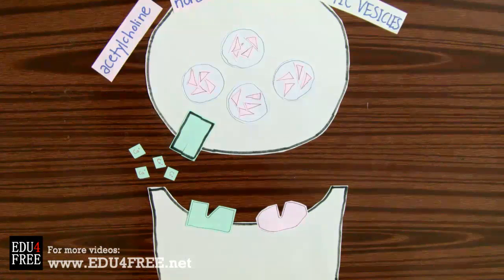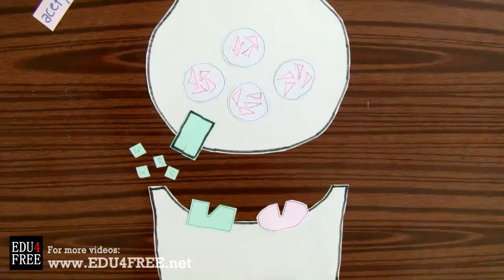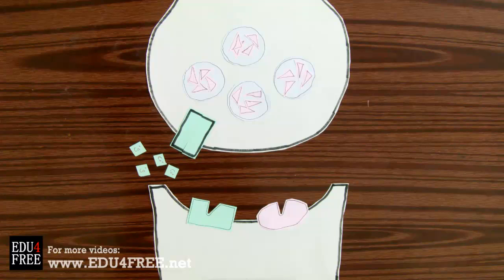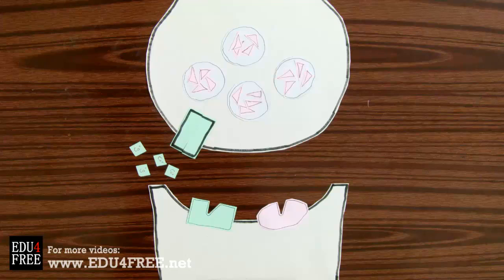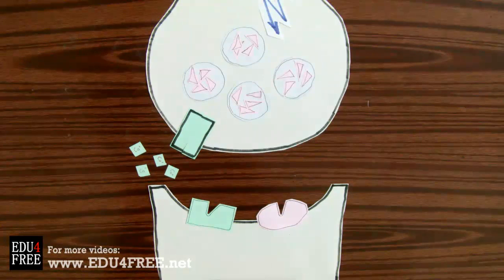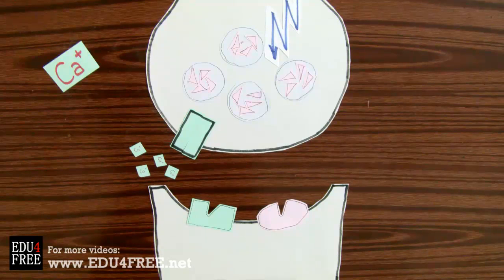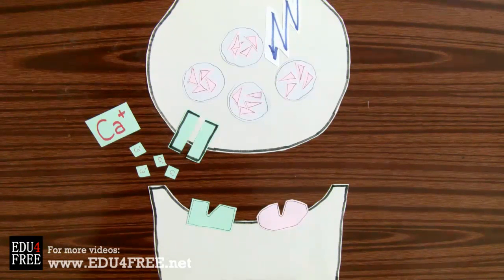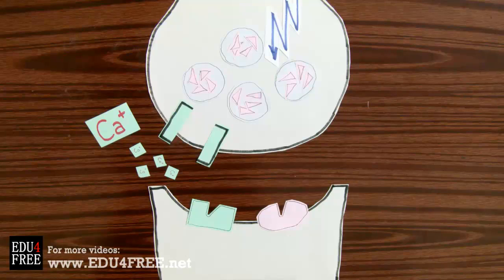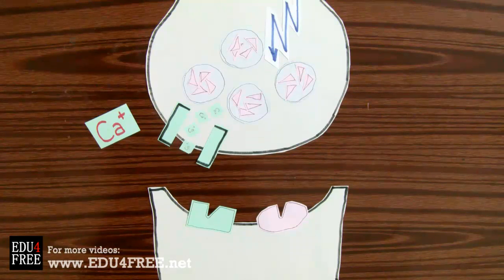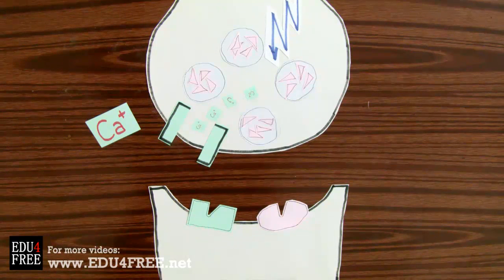When the nerve impulse arrives at the buttons, it leads to the entrance of calcium ions from outside the button through the opening of the calcium channel. This is called the calcium pump.